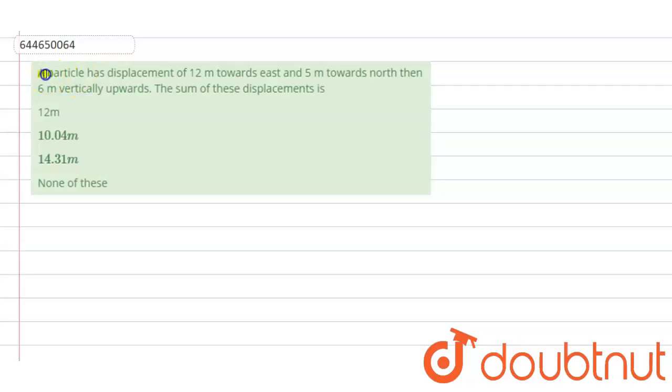Hello students. The question is: a particle has a displacement of 12 meters towards east, 5 meters towards north, and then 6 meters vertically upward. The sum of these displacements is...